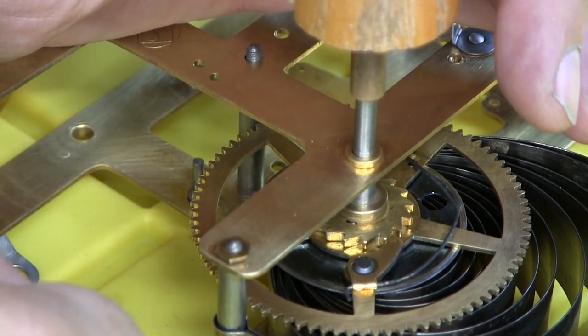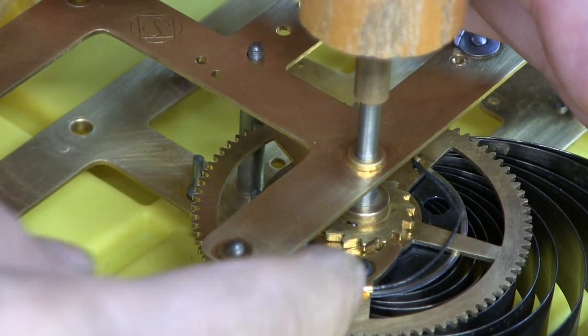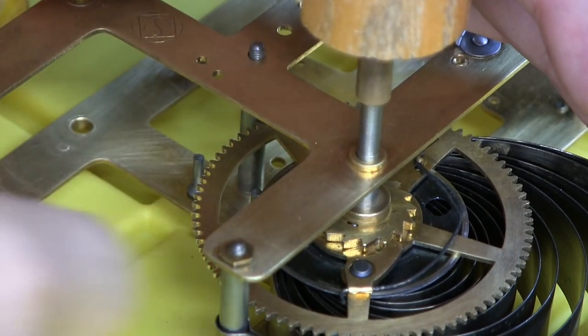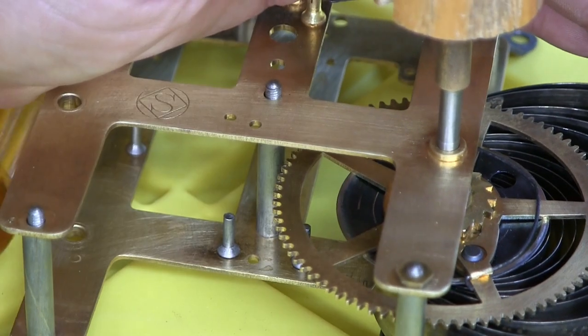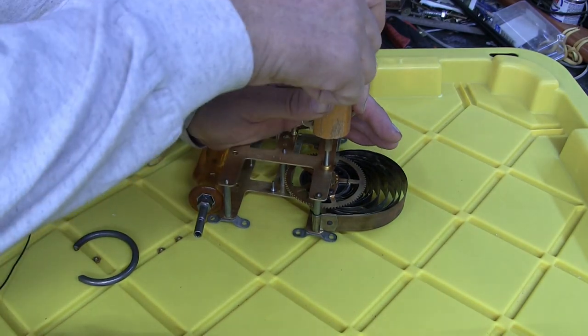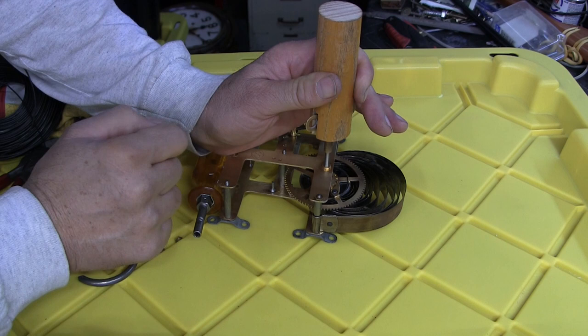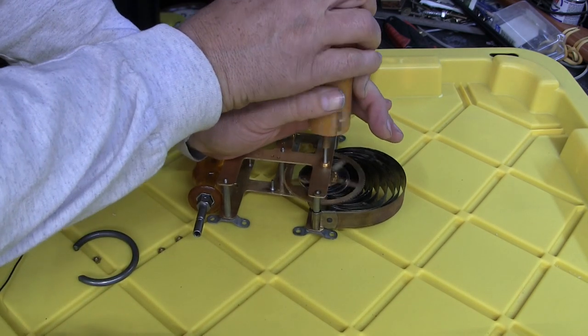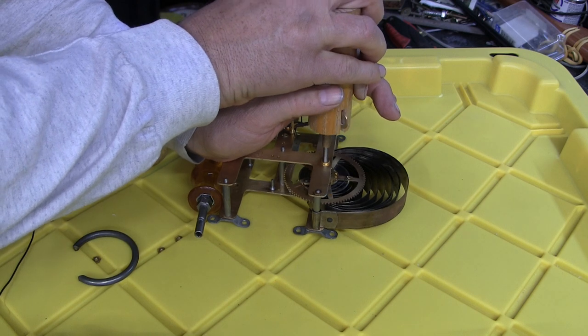Or you can hold the click with the point of a screwdriver, just raising it up. There's different ways. Basically all you want to do is once you turn this a little bit, release the click, and then you just let this spin in a controlled manner to let down your spring.